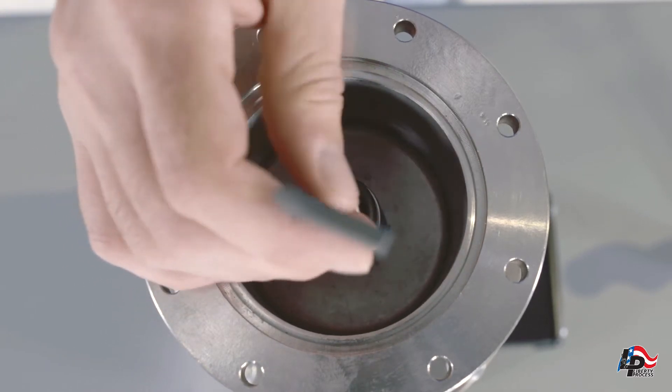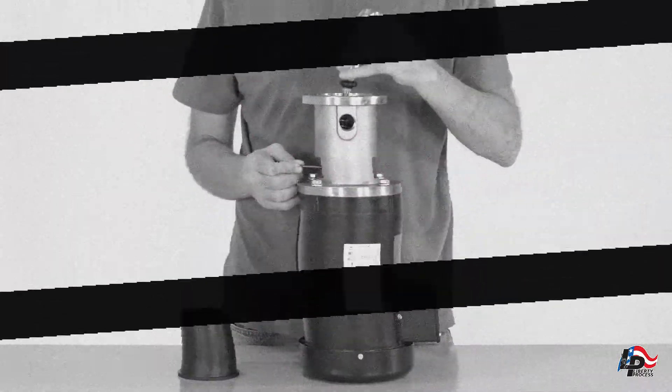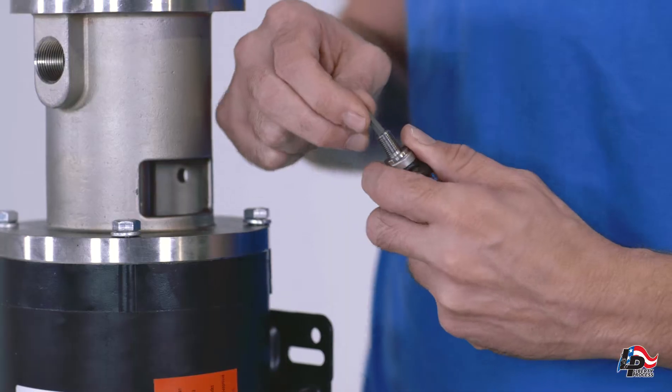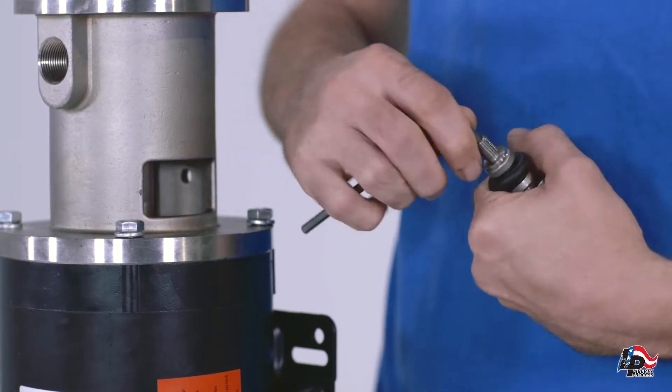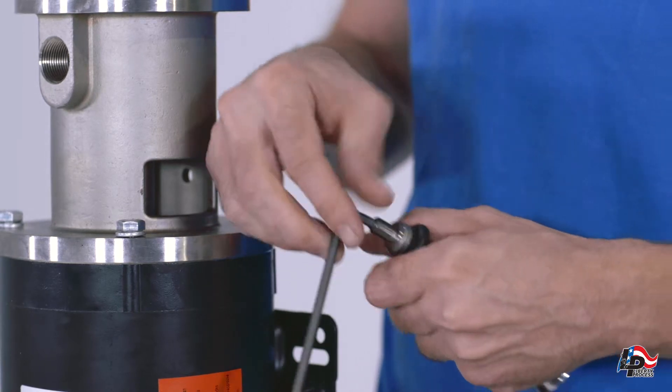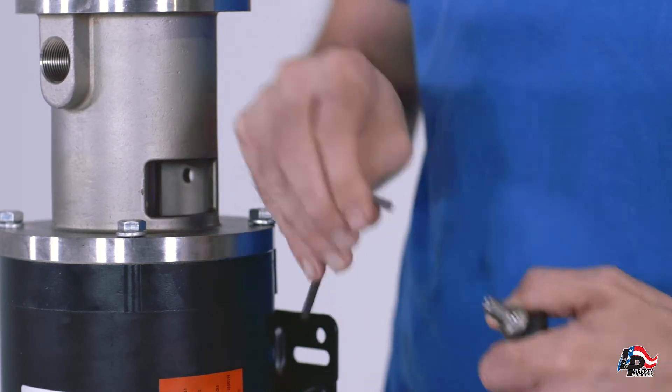Should the flex joint remain threaded to the rotor when the rotor is removed, simply grip the rotor firmly, insert the 3/16 inch Allen wrench into the flex joint and rotate counterclockwise.